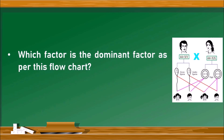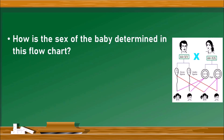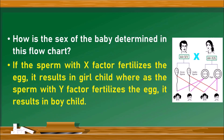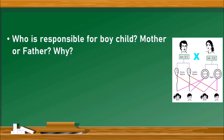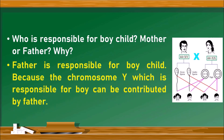As per this flow chart, the Y factor is the dominant factor. Regarding how sex is determined: if the sperm with the X factor fertilizes the egg it results in a girl child, and if the sperm with the Y factor fertilizes the egg it results in a boy child. The father is responsible for the boy child because the chromosome with the Y factor can only be contributed by the father, not by the mother.